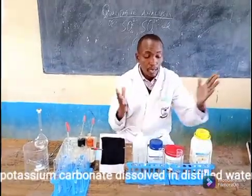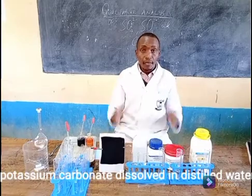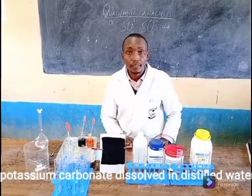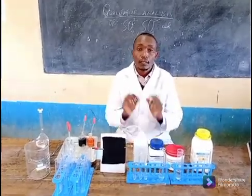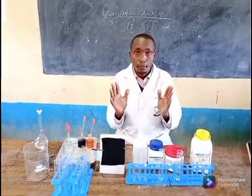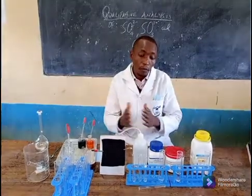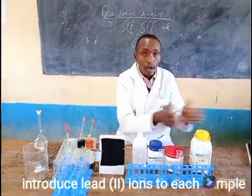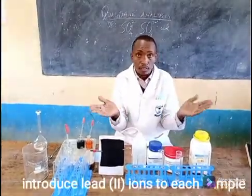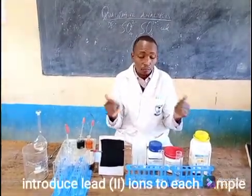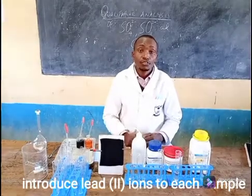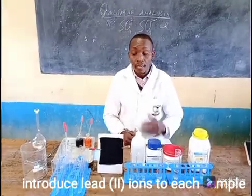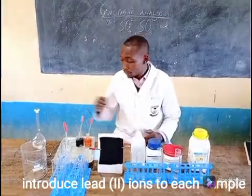And now, where do I start my analysis? I need to introduce a cation that will help precipitate out the three radicals. And the best cation that I can introduce is the lead-to-light.